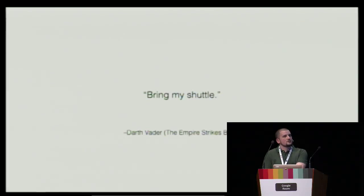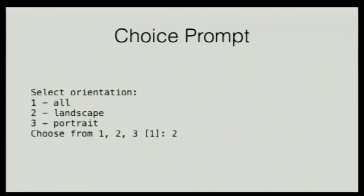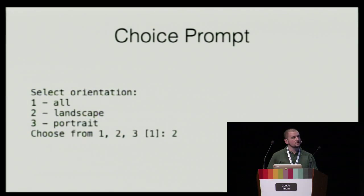I want to talk about features currently in development — we actually merged them already but just haven't published to PyPI yet, it's just a matter of days. Coming up is choices in templates, requested by the community. For example, I can specify an orientation for my app with Kivy: it can auto-adjust, or be fixed to landscape or portrait mode. When I run this from a template I'll be prompted by Click — we use Click for all the prompting and it works really nicely. If any of you want to write an interactive command line, just use Click.